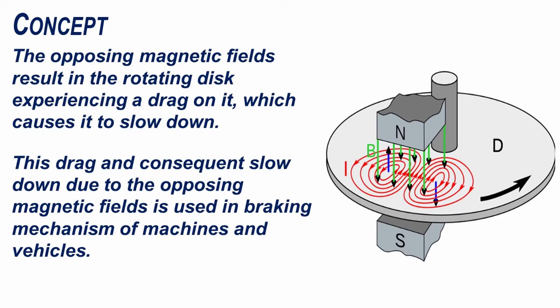This drag and consequent slow down due to the opposing magnetic fields is used in braking mechanism of machines and vehicles.